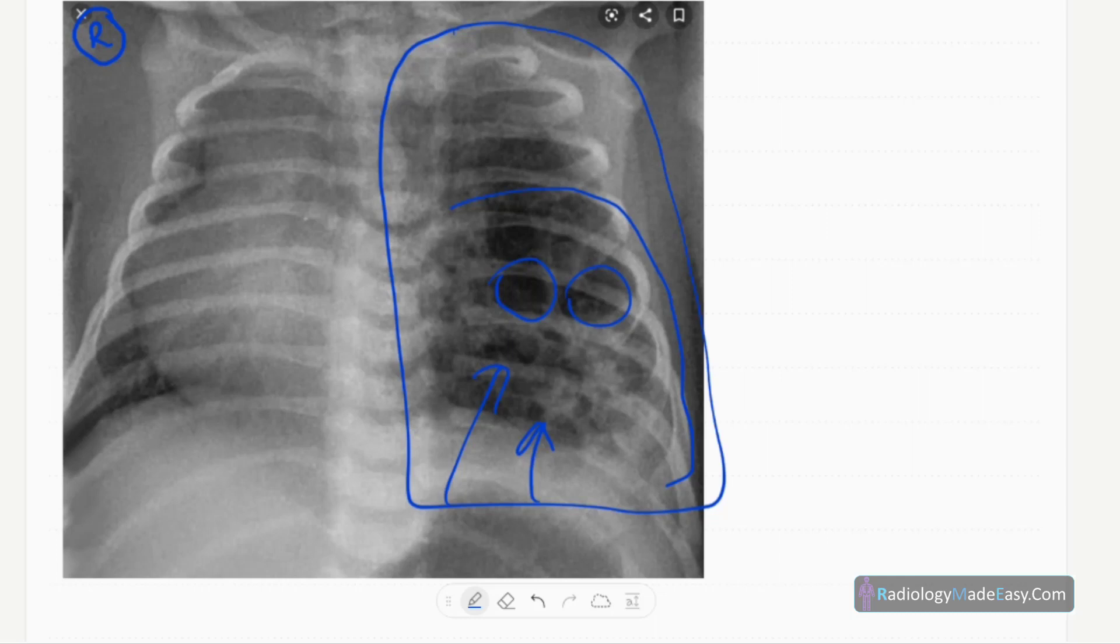Apart from this, the mediastinum is shifted to the right side. Heart and thymus are shifted to the right side. Trachea is also shifted. However, no pleural effusions can be seen.